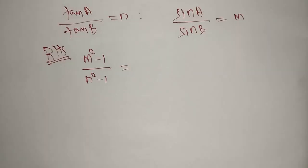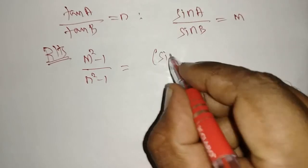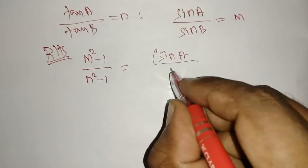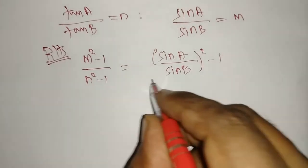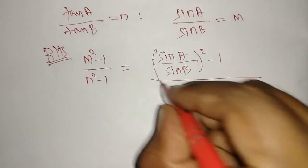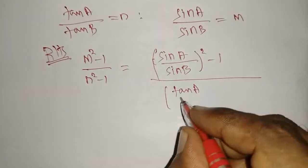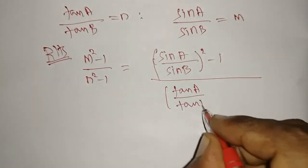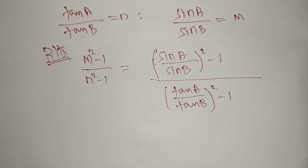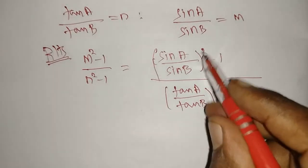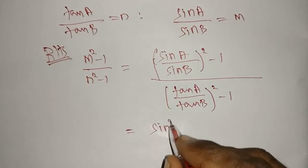We will start to substitute. First, m² = (sin A / sin B)², so we get (sin A / sin B)² minus 1 in the numerator. Likewise, n² = (tan A / tan B)², so we get (tan A / tan B)² minus 1 in the denominator. Now simplify — apply the square and take cross multiples.